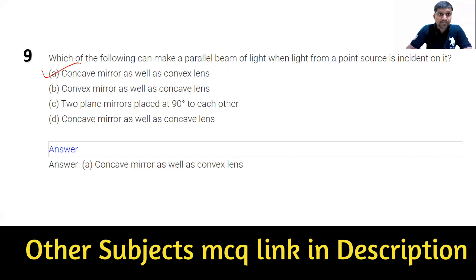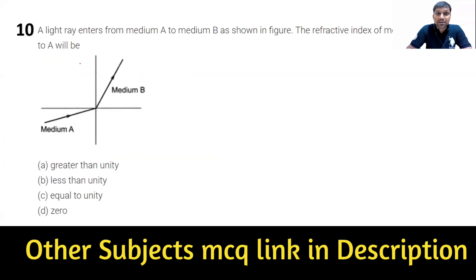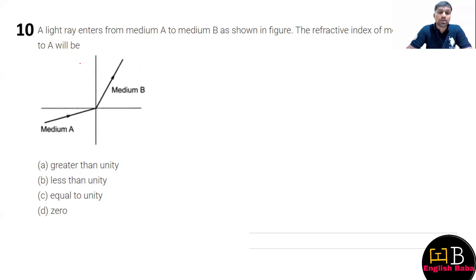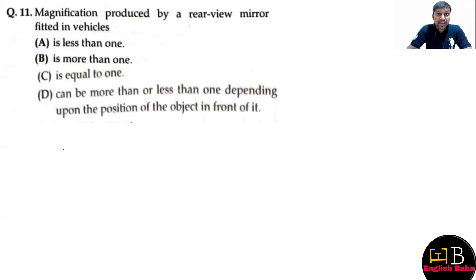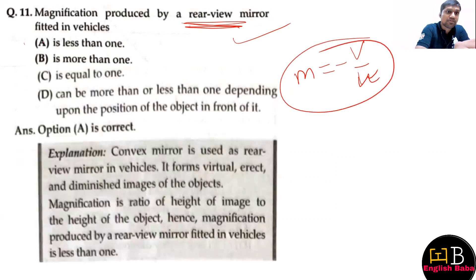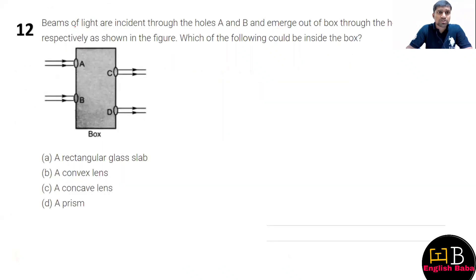Next, which one of the following can make a parallel beam of light from a point source? The correct option is option A: concave mirror as well as concave lens. Next question: light is traveling from medium A to medium B, so the refraction will be greater than unity, so option A is correct. Next, magnification produced by a rear view mirror in automobiles - the magnification is m equals minus v by u for mirrors, so the magnification will be less than unity or less than one.